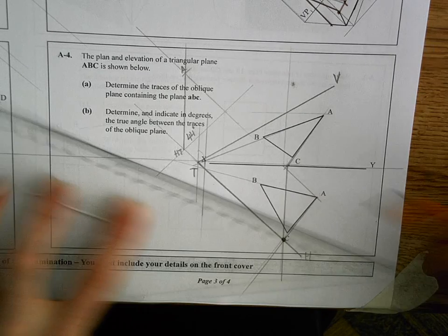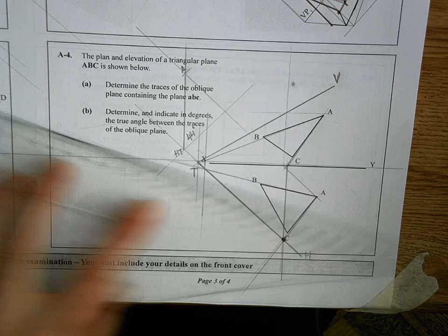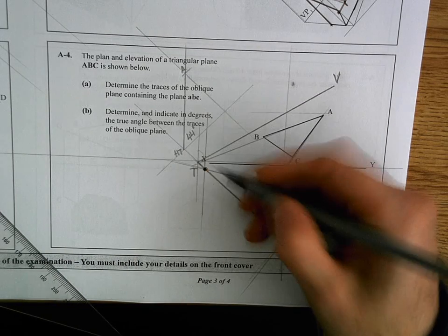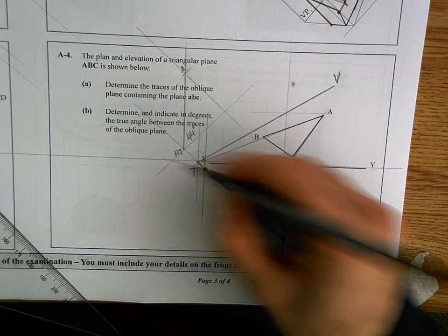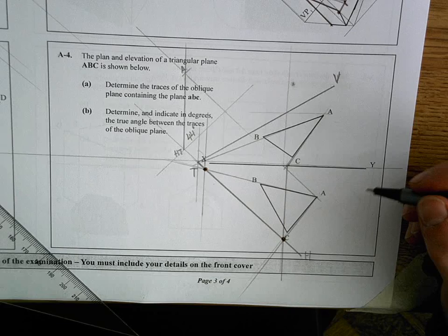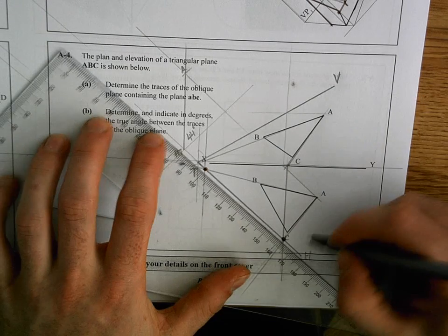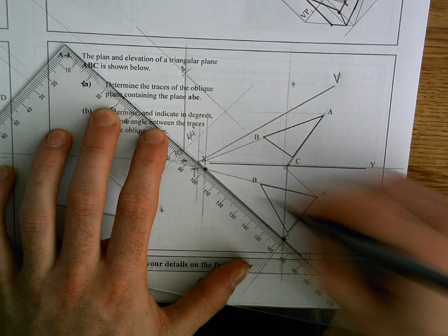Do exactly the same from AB. Look through it. Again, they cross over each other, where I dropped it down originally from the plan view. Look through AB, cross over. That's the second point on the ground. So when I join those two ground points together, I have my horizontal trace.